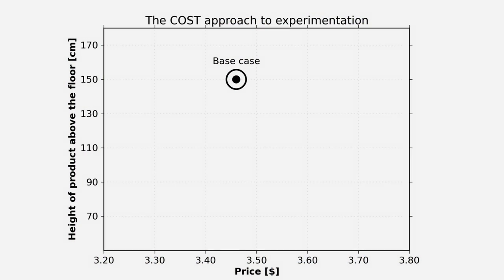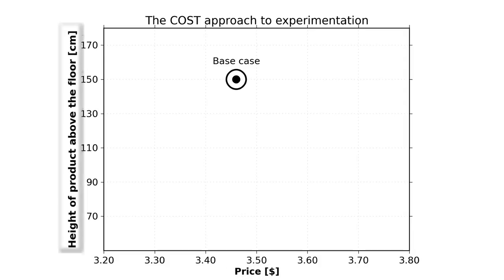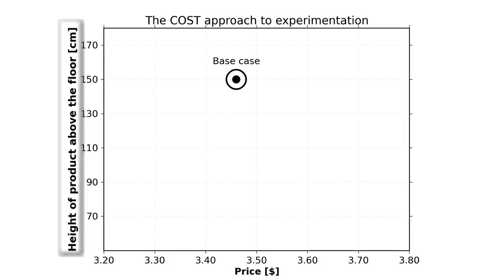Join me now and allow me to show you this topic of optimization and why it's so important. To start off, I'm going to show you why the idea of changing one factor at a time is not efficient. Let me use this example to show why. A grocery store is considering varying the price of their product and the height of the shelf where the product is placed on.